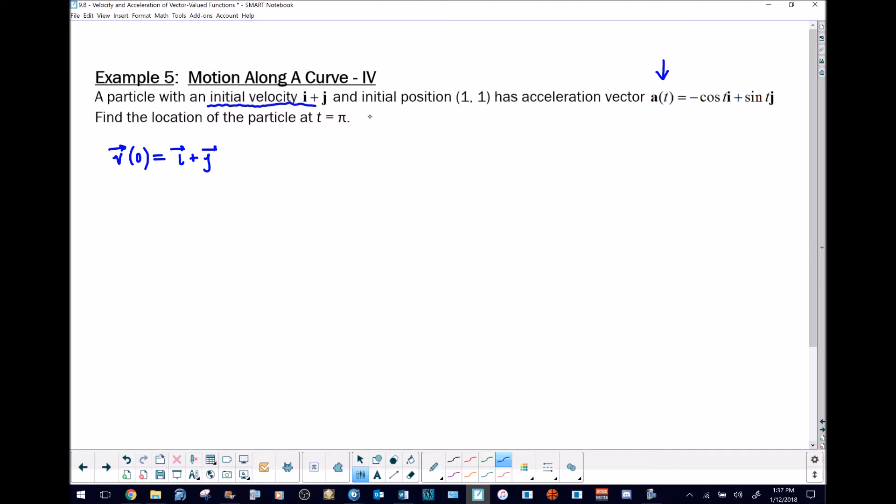We also have information about the initial position. That's the same idea except we can use s, or I'm going to use r. I know that might seem strange, but in my classes we've been using r for the position vector. I know we used s quite frequently for position function.